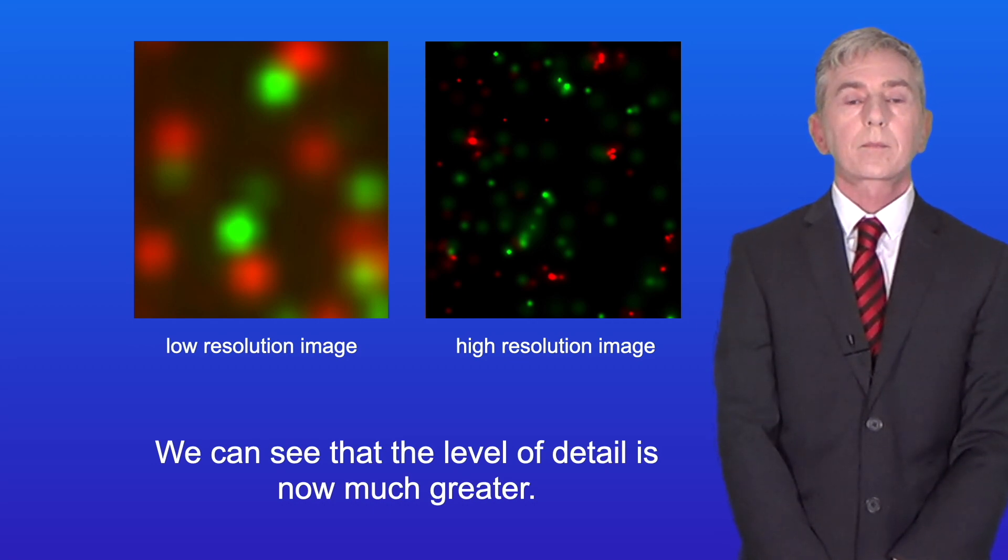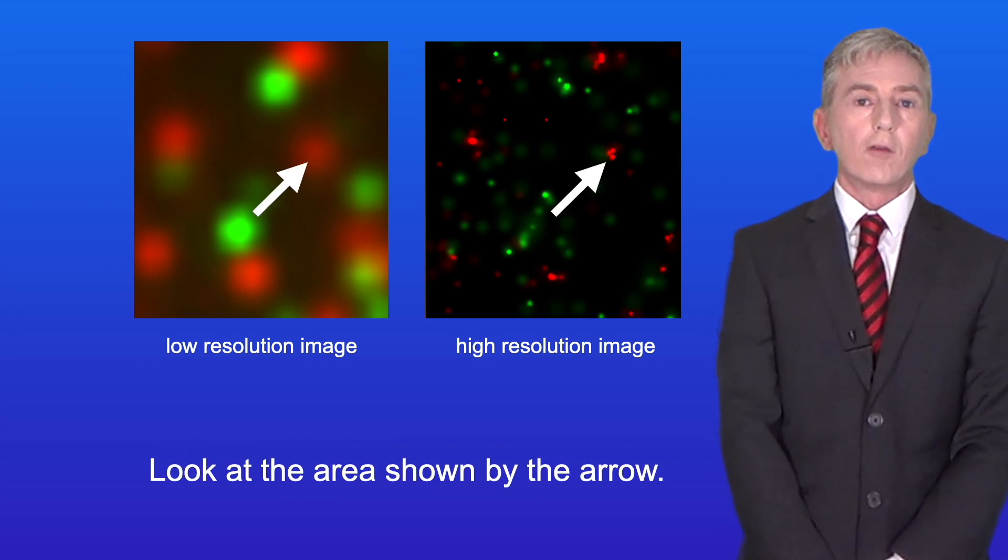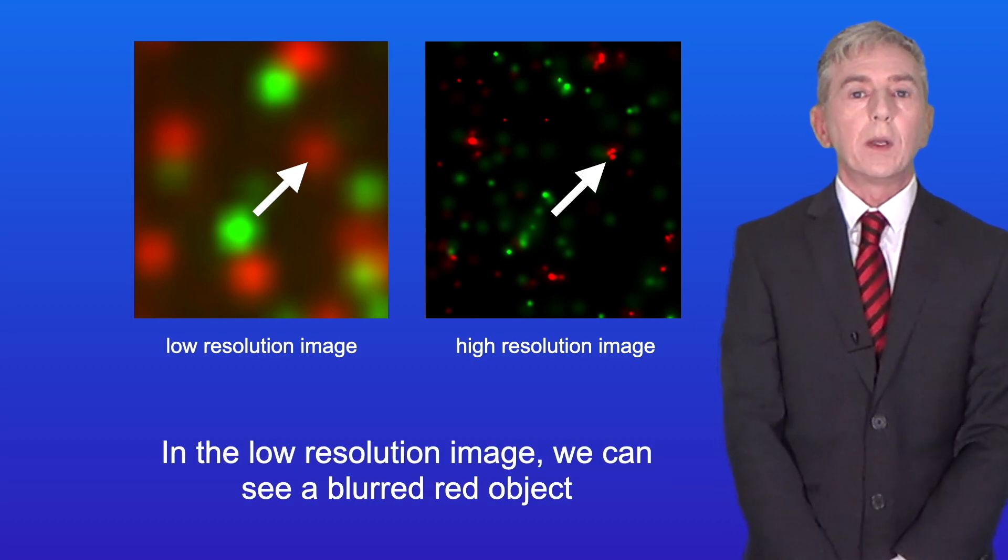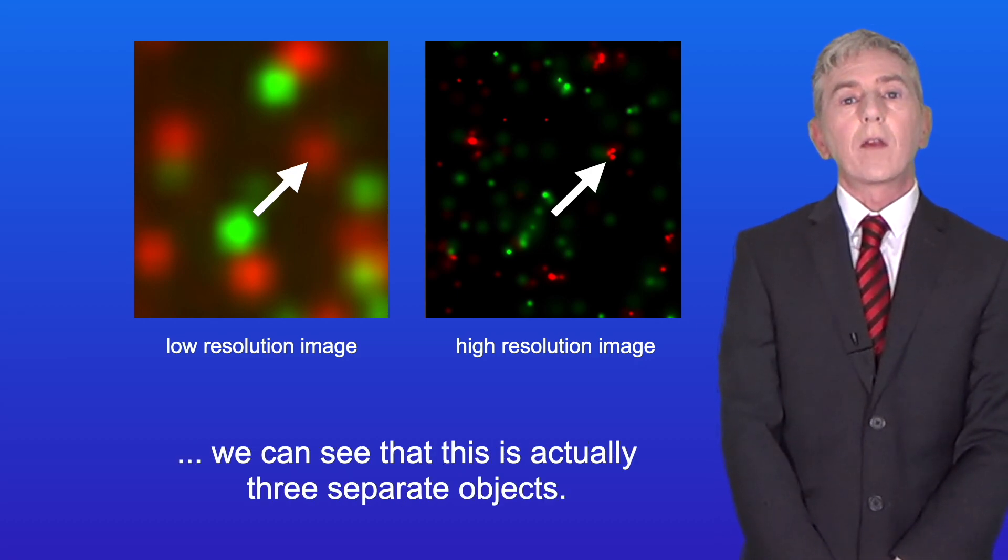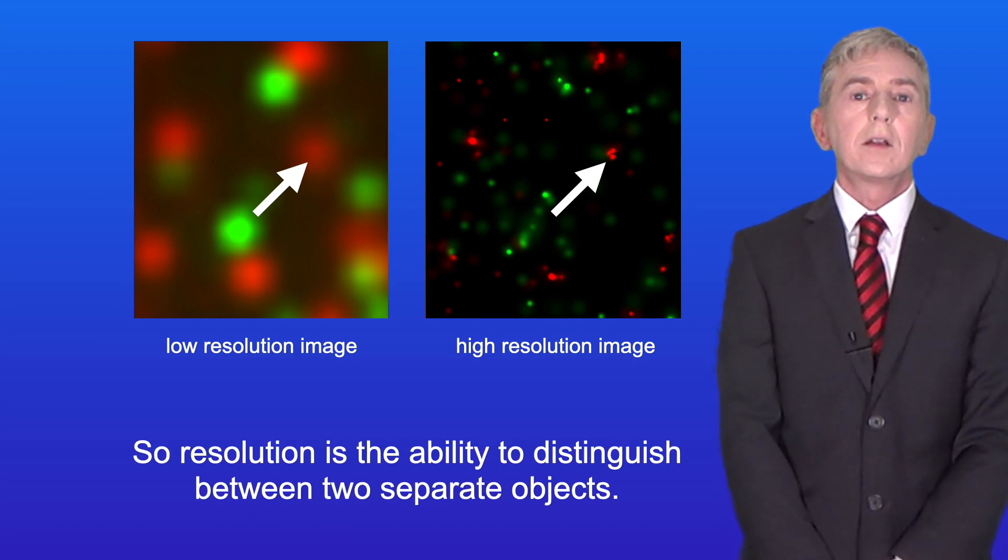Look at the area shown by the arrow. In the low resolution image we can see a blurred red object. However, in the high resolution image we can see that this is actually three separate objects. So resolution is the ability to distinguish between two separate objects.